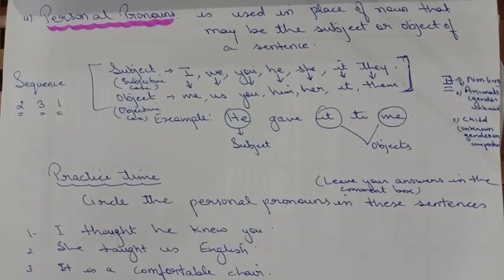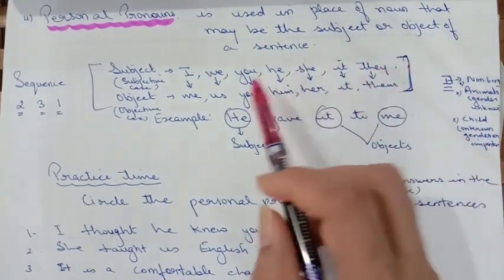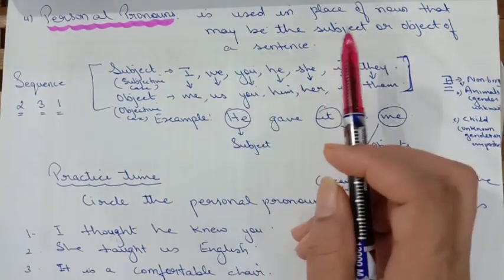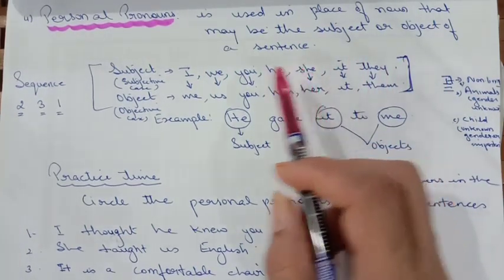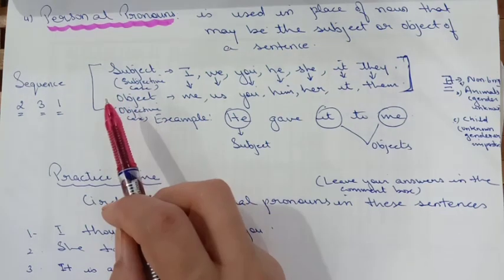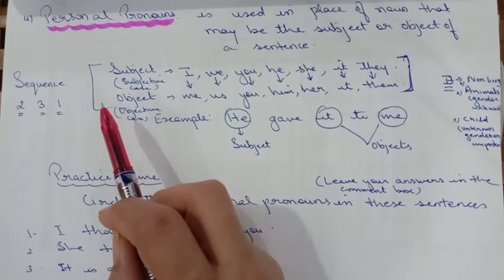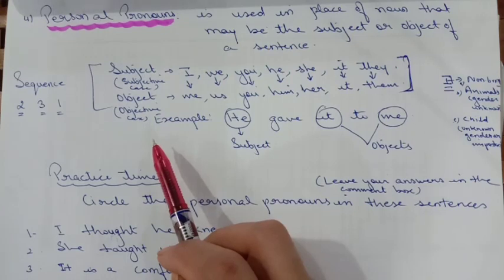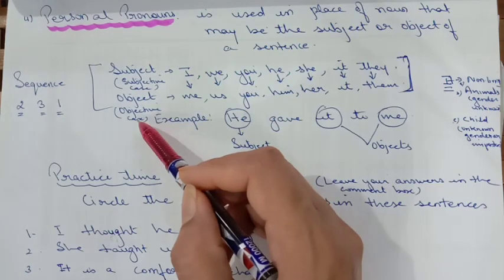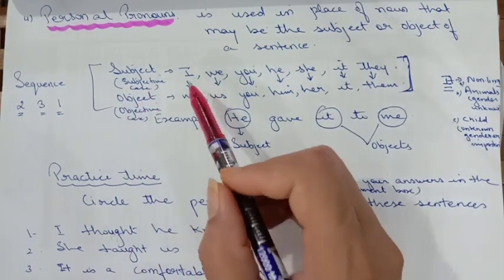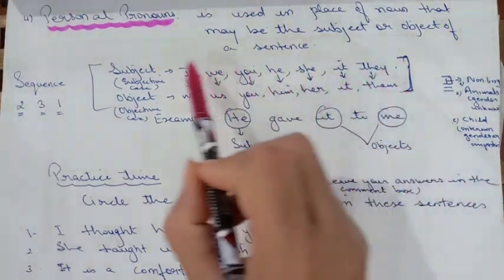Now, the personal pronouns. A personal pronoun is used in place of a noun that may be the subject or object of a sentence. You have two cases in personal pronouns: the subjective case and the objective case. When you use it as a subject, it is the subjective case; when used as an object, it becomes the objective case. For the subject you use: I, we, you, he, she, it, they — these are all your subjective case pronouns.